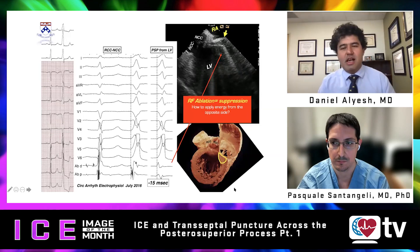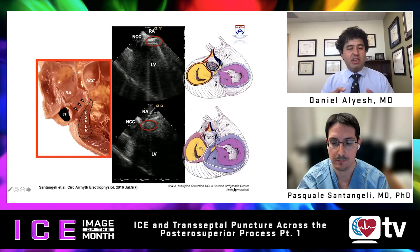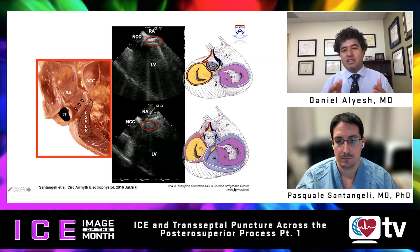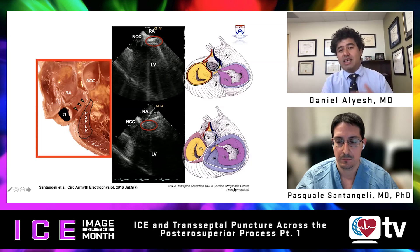Moving to the next slide, this area has high-impact collateral anatomy — including the slow pathway, the coronary sinus, and the crux of the heart. The McAlpine anatomy has been juxtaposed with ICE images here. Dr. Santangeli, can you describe the anatomic relationships in this region and how ICE helps distinguish them all?